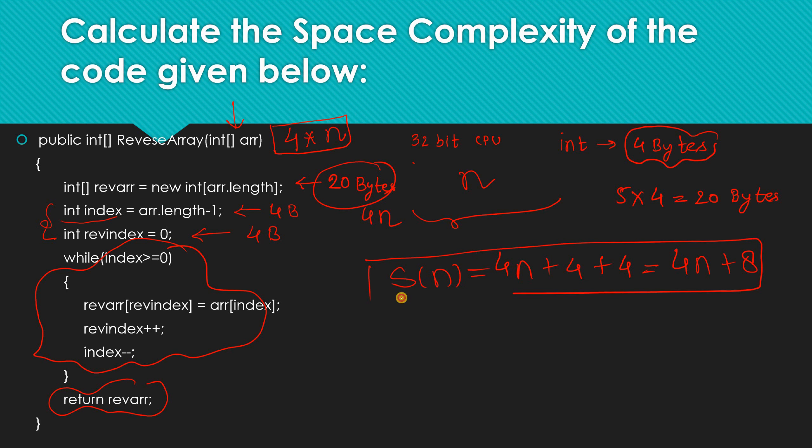Let's see the optimized version. Here we declare one 'start' variable, one 'end' variable, and one 'temp' variable. Taking the same example — 1, 2, 3, 4, 5 — start is at index 0, end is at the last index. We set temp equal to array of start, so temp contains 1. Then we set array of start equal to array of end, so position 0 now contains 5. Then we copy temp to array of end. So our array becomes 5, 2, 3, 4, 1. After this, we increment start and decrement end.